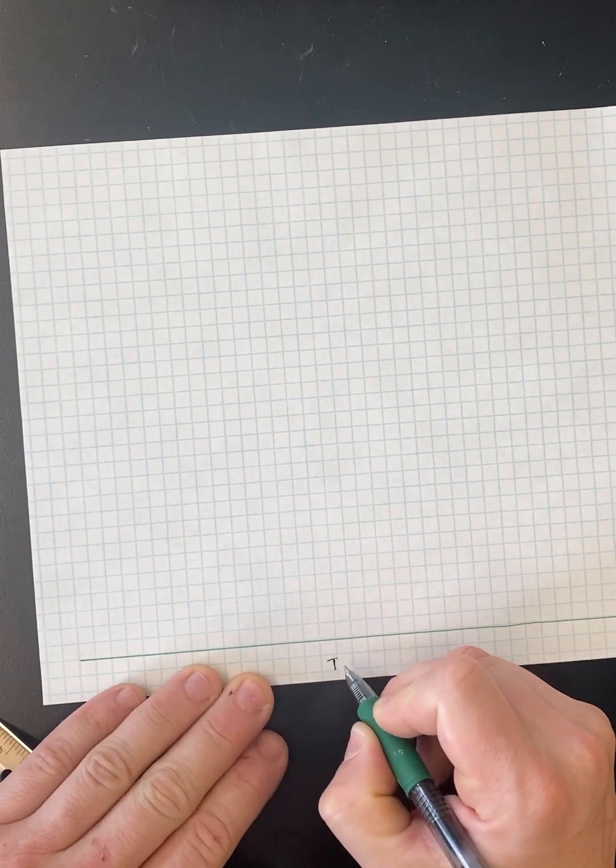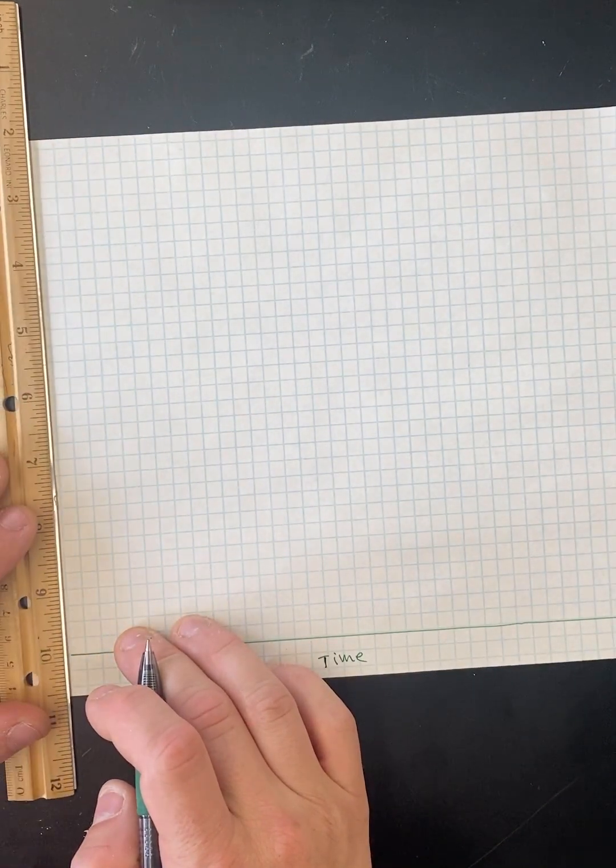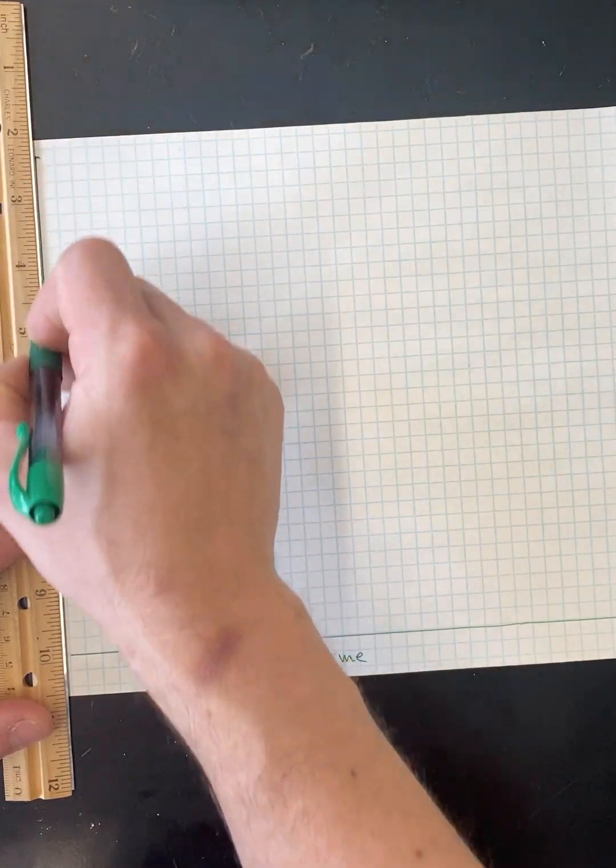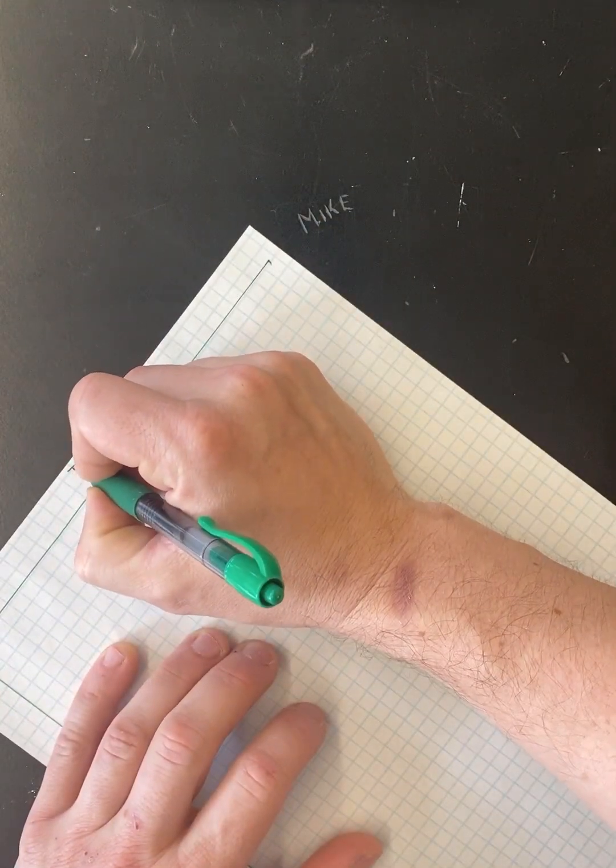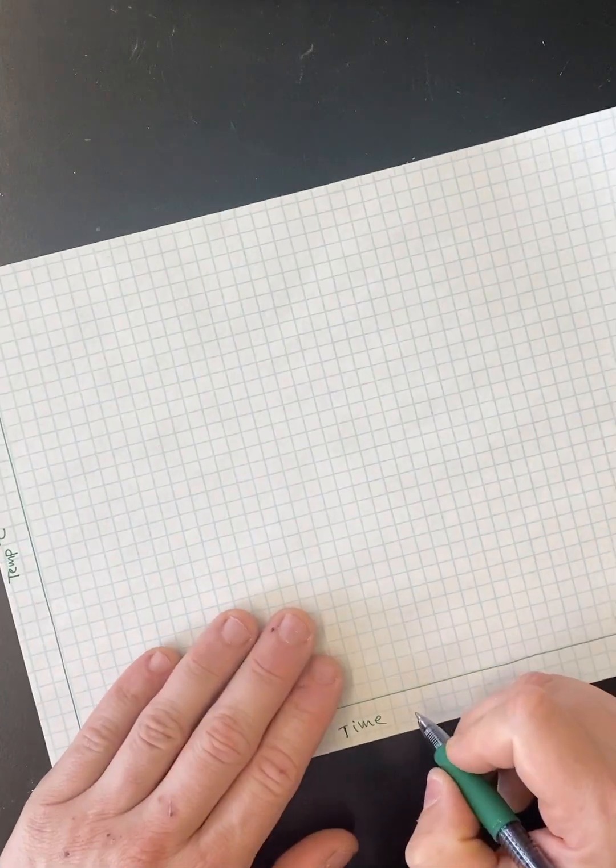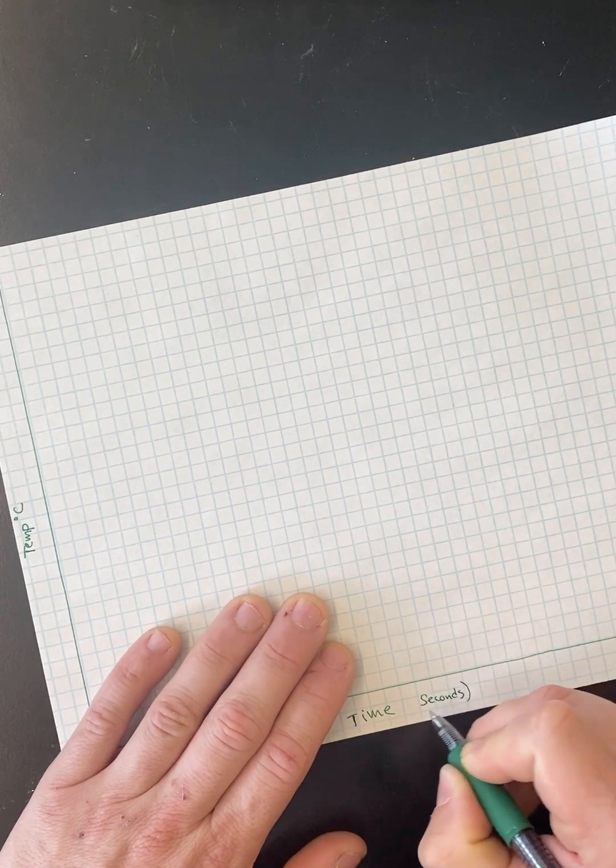This is going to be time on our x-axis and temperature on our y-axis. The temperature is going to be in degrees Celsius. Your time is going to be in seconds.